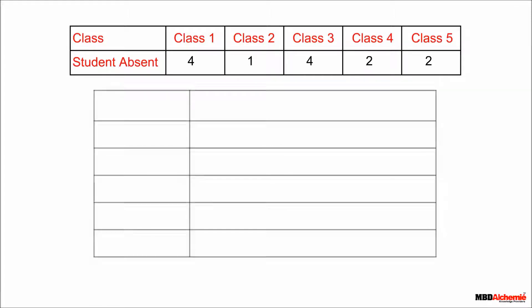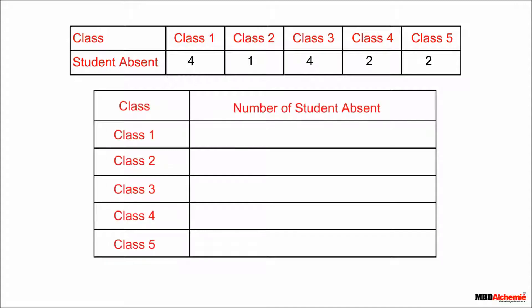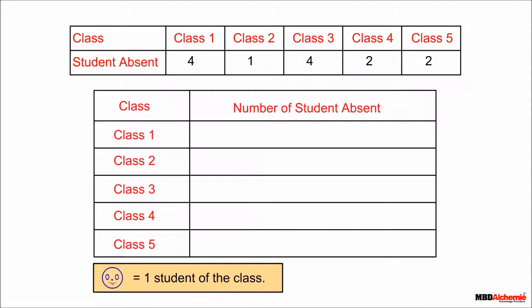Let us first draw a table for the pictograph. Make a row for each class. We draw one picture to represent one student. Four students are absent in class 1, so we draw four pictures for class 1.